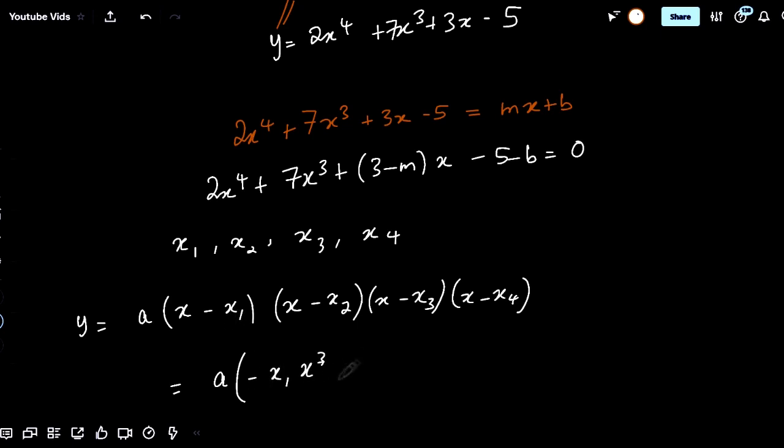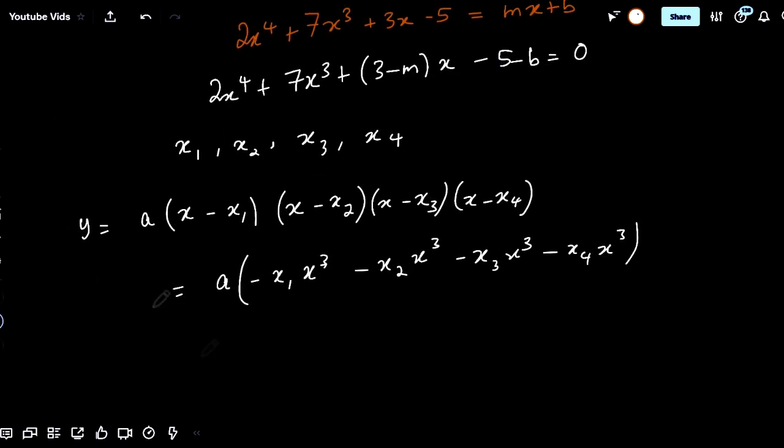minus x3, minus x4, times x cubed, which gives us that the cubic term is actually going to be minus ax cubed times x1 plus x2 plus x3 plus x4, which is actually what we're looking for.